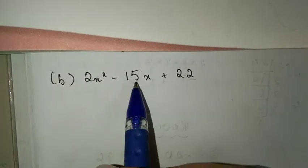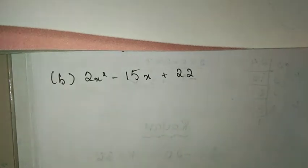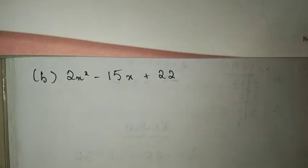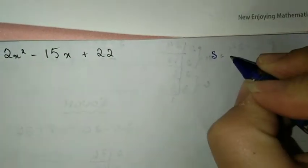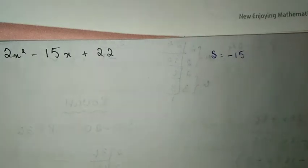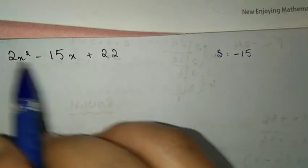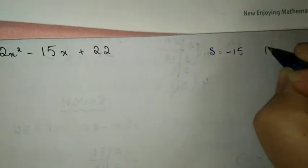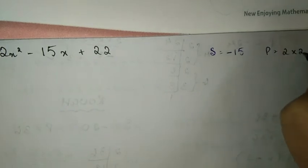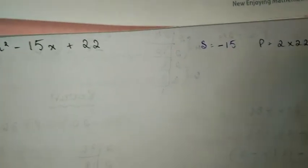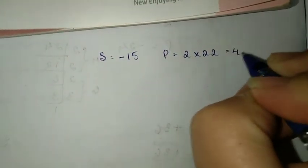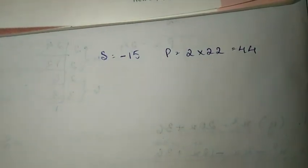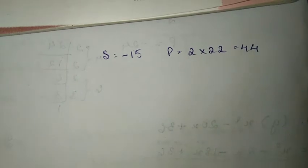For B over here, we talk about middle term. The number we multiply gives the product, and the sum gives minus 15. So the product is 2 times 22, which gives 44.